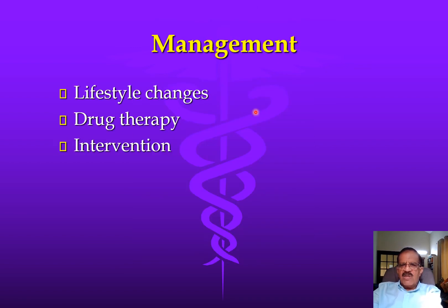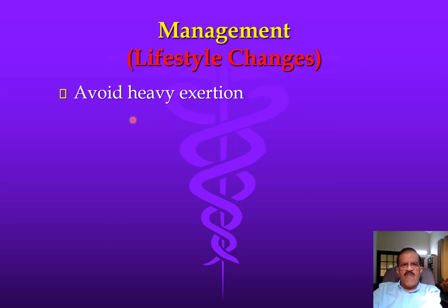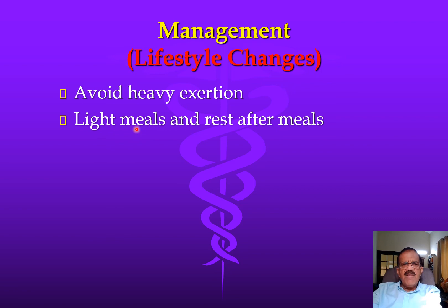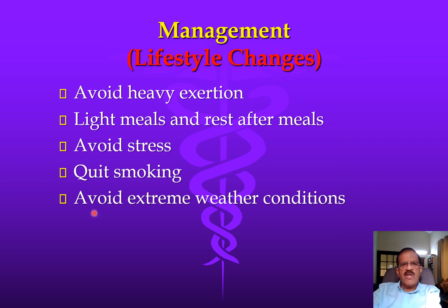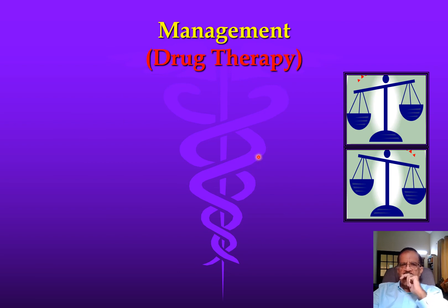Moving to management of ischemic heart disease — chronic stable angina can be managed with lifestyle changes, drug therapy, and intervention. For lifestyle changes: avoid heavy exertion; take light meals and rest after eating; any necessary exertion should be done on an empty stomach; avoid stress where possible; definitely quit smoking — this won't make the angina go away immediately, but it will help stop further progression; and avoid extreme weather conditions.